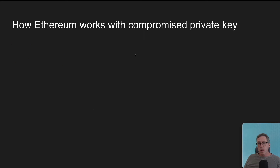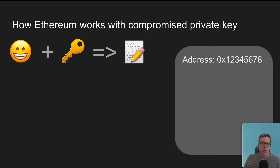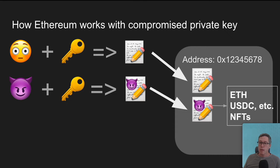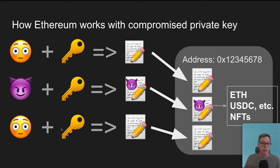The same is true for accounts that have a compromised private key. You still have a copy of the private key, you can still sign transactions, and you can still broadcast them to the network. The problem is that the scammer can do so as well, and when they do, it will be transactions taking all of the available ETH, ERC20 tokens, and NFTs. But just because they are sending transactions doesn't mean you can't as well — you can continue to send transactions to move assets that have not been taken.